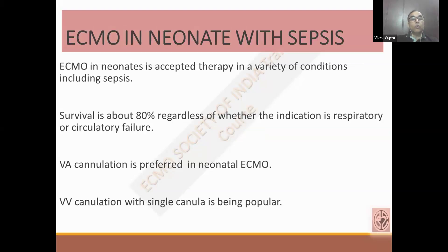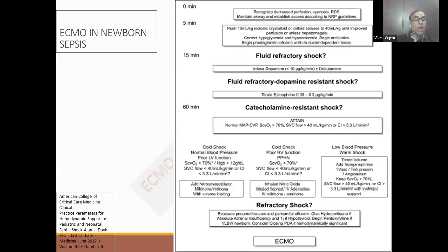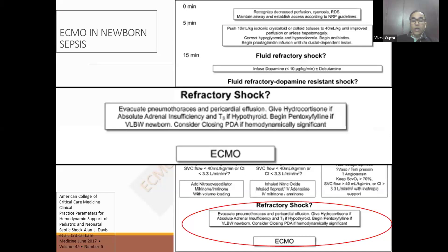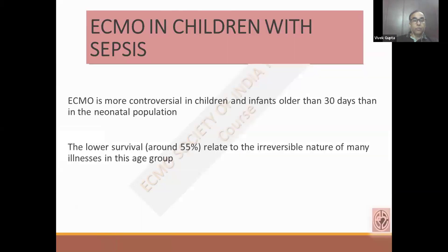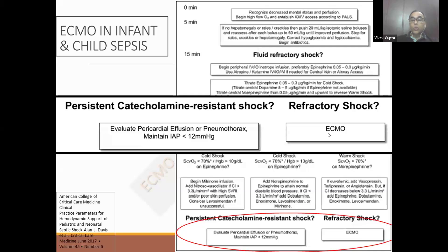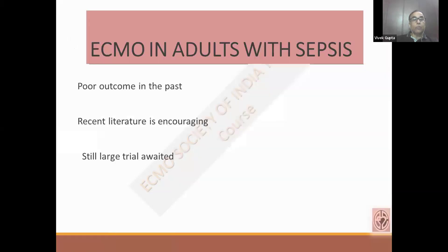In the neonate, survival is almost 80% with ECMO for respiratory failure — VA ECMO was preferred, but VV cannulation with a single cannula is also getting popular. Recent guidelines also recommend the use of ECMO in refractory shock. Similarly, in the young child, ECMO is being used but survival is still not as good as in neonates. The guidelines suggest use of ECMO in refractory shock once other causes are ruled out, including pericardial issues, and maintaining intra-abdominal pressure less than 12 mmHg. If the patient is not maintaining saturation or has refractory shock, we can support with ECMO. In the past it was poor outcome, but recent literature is definitely encouraging, though we need larger studies.